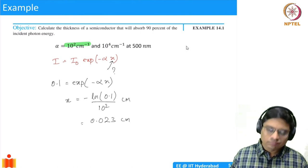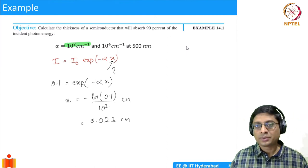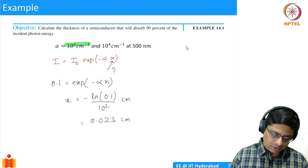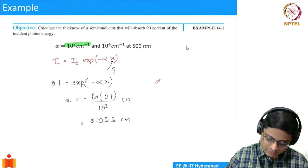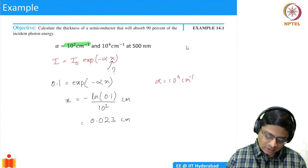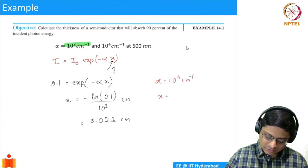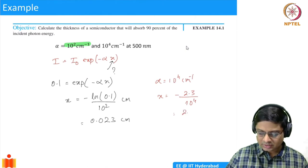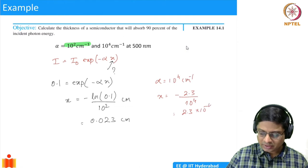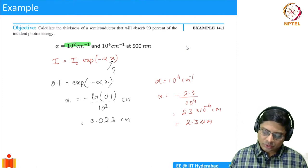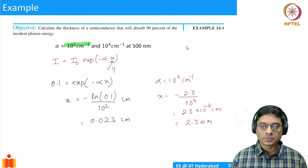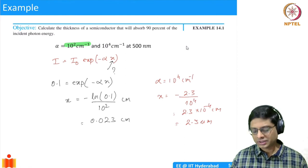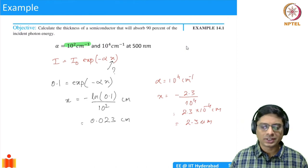If the absorption coefficient is larger — say α = 10⁴ cm⁻¹ — then x = 2.3 / 10⁴ = 2.3 × 10⁻⁴ cm = 2.3 micrometers. With a strong absorption coefficient you only need 2.3 micrometers of thickness to absorb 90% of the energy.